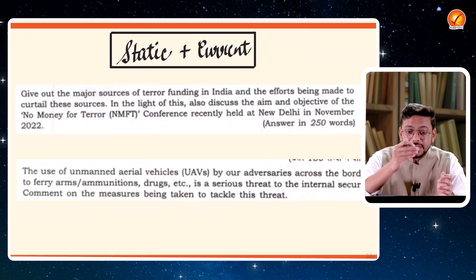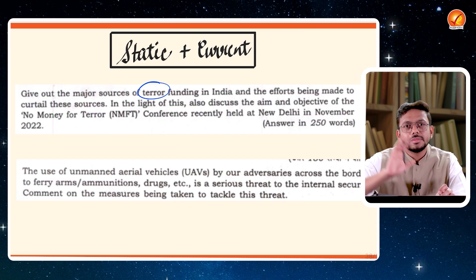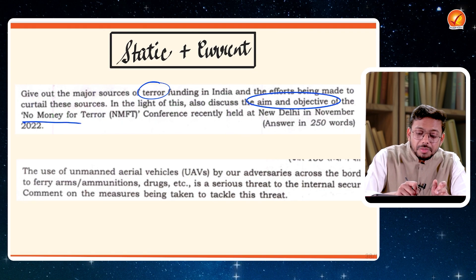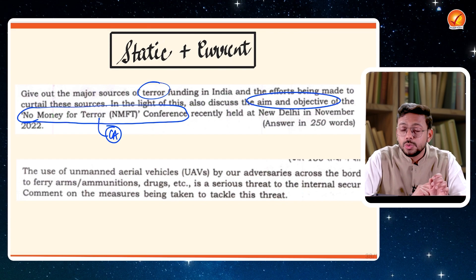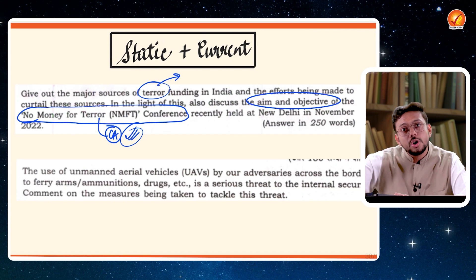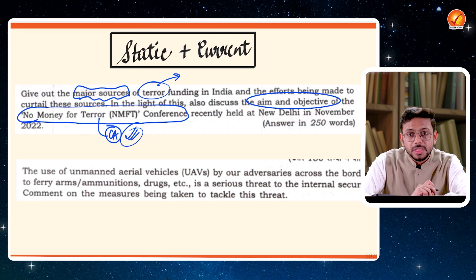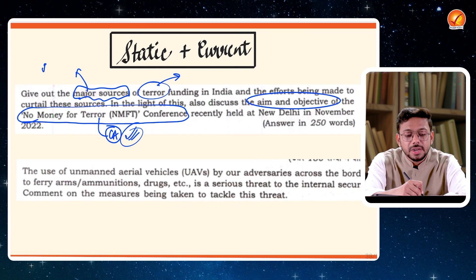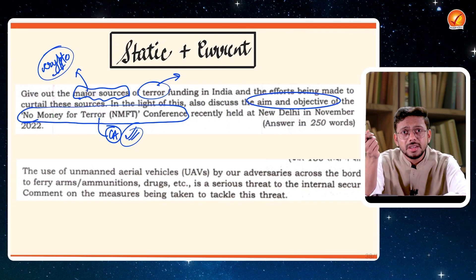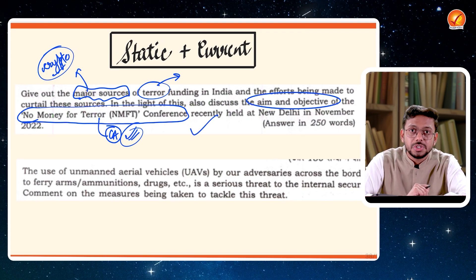Static and current in terms of multiple themes — for example, terrorism. It's a static topic in your GS3 internal security paper. But the question asks: what are the aims and objectives of the recently held 'No Money for Terror' conference? That is pure current affairs — you won't read that in the static portion. In the present scenario, sources of terror funding keep changing — for example, cryptocurrency is becoming an important parameter. Multiple new funding sources are being created for terrorism, and that is the expectation of such questions.